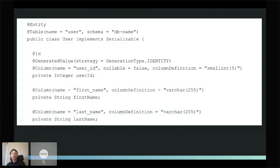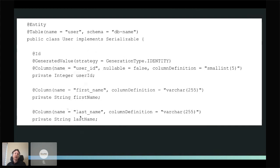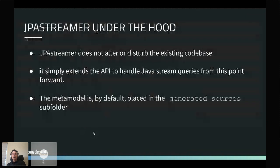Let's look at what an entity actually looks like. This is an example of a user entity declared in JPA — completely normal, nothing changed. We don't have to do anything with the existing code. It has user ID, first name, last name, and other properties. JPA Streamer does not alter or disturb the existing code base. It just adds the ability to handle Java stream queries. Everything you had before still works — this is just a thin layer on top of JPA.